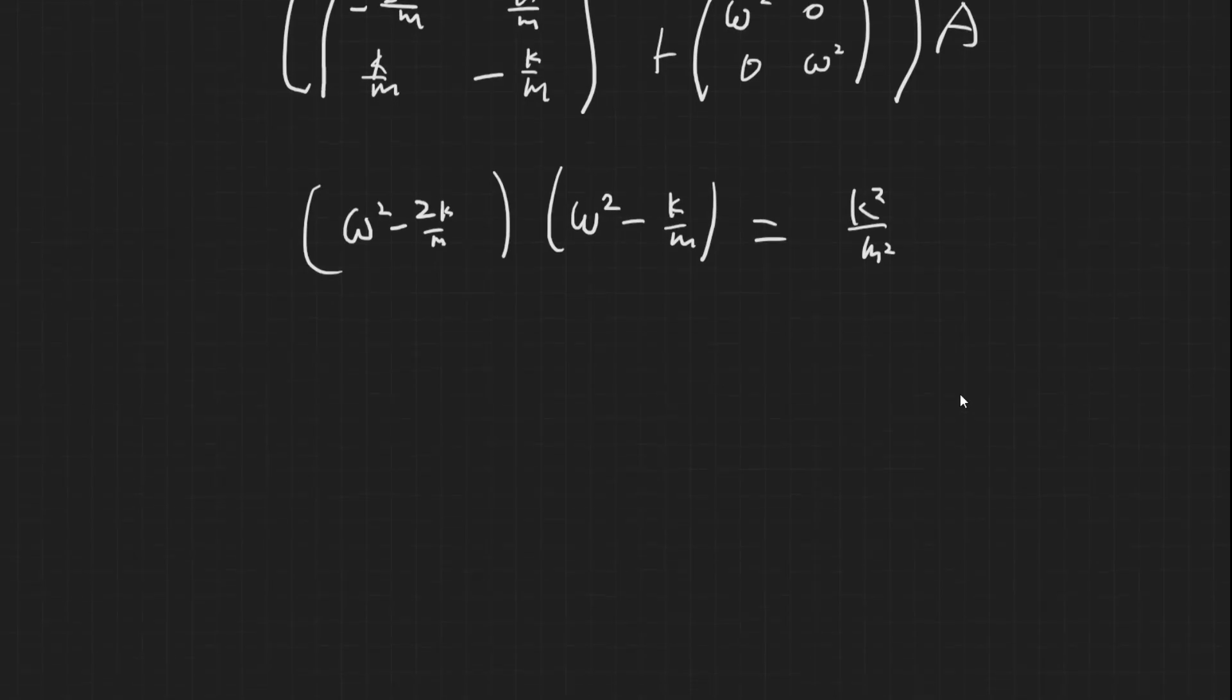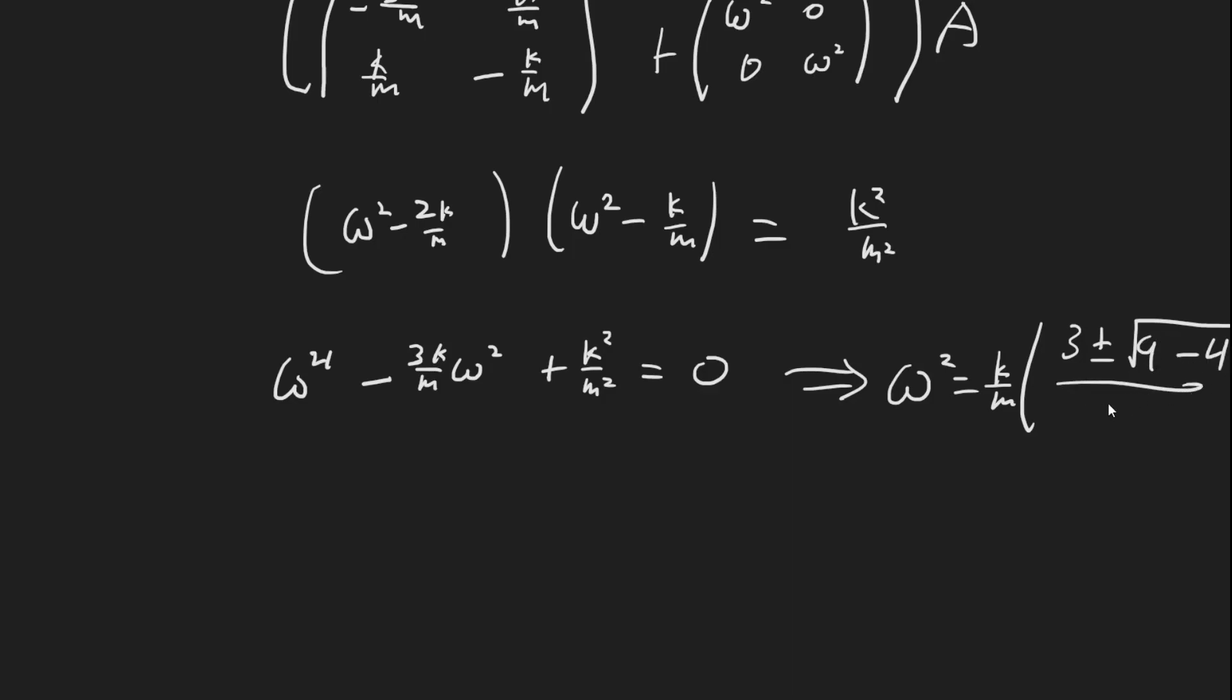And now let's just rearrange this, or expand it. It's going to be omega to the 4 minus 3k over m omega squared plus k squared over m squared is equal to 0. And by the quadratic formula, this gives omega squared is equal to, let's factor out the k over m, times 3 plus or minus square root, 3 squared is 9, minus 4ac is 4, over 2.